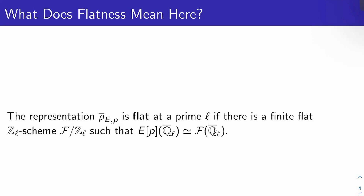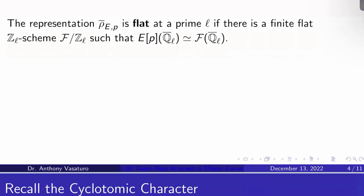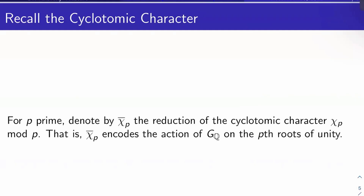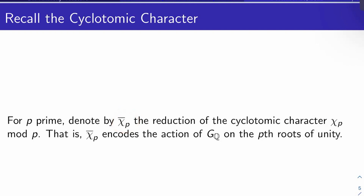You'll see what I mean when we get into Theorem 1 in a moment. Let's recall the cyclotomic character. For P prime, let chi-bar_P be the reduction of the cyclotomic character chi_P mod P. Chi_P encodes the Galois action on all of the P-to-the-N roots of unity compatibly. The reduction chi-bar_P encodes the Galois action just on the P roots of unity.